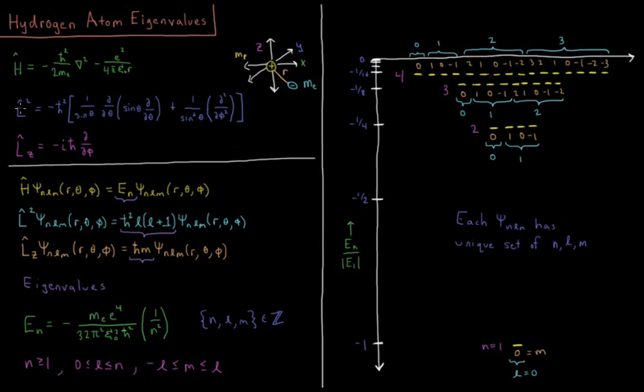Those are the operators that we introduced for the rigid rotor model system. The total angular momentum operator squared, which is equal to negative h-bar squared times the radial part of this Laplacian, so 1 over sin theta dd theta quantity sin theta dd theta, plus 1 over sin squared theta second partial derivative with respect to phi, in terms of the spherical polar coordinates theta and phi, the angular components.